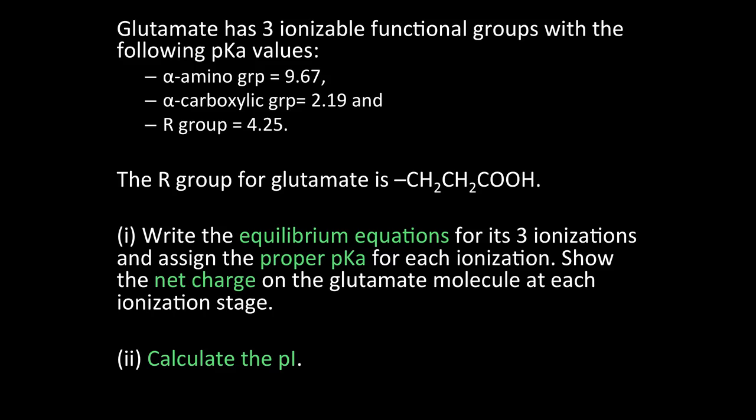You need to write the equilibrium equations - in other words, you're going to start with a fully protonated form of glutamate and then show as titration goes along with a base, moving the proton each step of the way. You're going to show those equations, assign the correct pKa value to each one, give the net charge for each species, and finally calculate the pI.